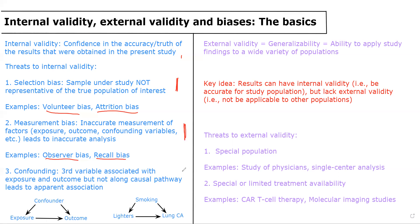The third threat to internal validity is confounding, where a third variable is associated with both the exposure and the outcome, but not along the causal pathway, and leads to an apparent association. This is depicted in the diagram in the bottom left, where the confounder is associated with both the exposure and the outcome but not along the causal pathway. The classic example is a study looking at the association between having a lighter and lung cancer — those who have lighters in their pockets are more likely to develop lung cancer, but the important confounding variable is smoking, because smokers are more likely to carry lighters and also more likely to develop lung cancer. I get into more detail about each of these biases in the next set of videos.